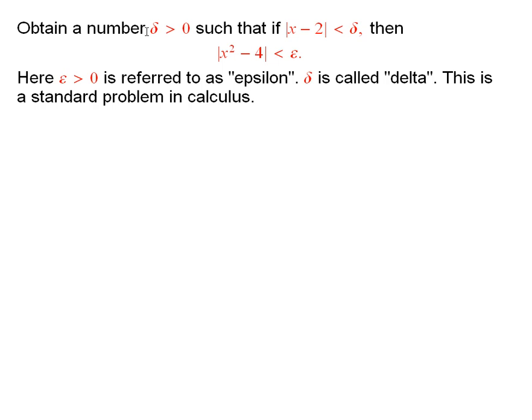What we want to do is show there exists a number delta bigger than 0, this is the Greek letter delta, such that if x minus 2 is smaller than delta in absolute value, then x squared is closer to 4 than epsilon, where epsilon is a given positive number. This is a standard problem in calculus.